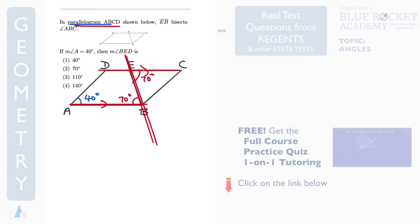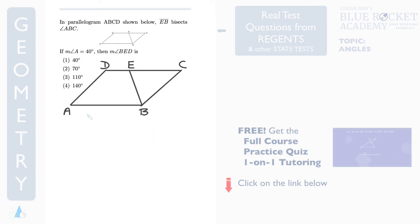Now, if this is 70, the final step is to find out what is this angle. Because this plus this is 180 degrees — they are supplementary angles — it's going to be 180 minus 70, which is 110. Because 110 plus 70 gives you 180 degrees. So therefore, 110 degrees is your correct answer.